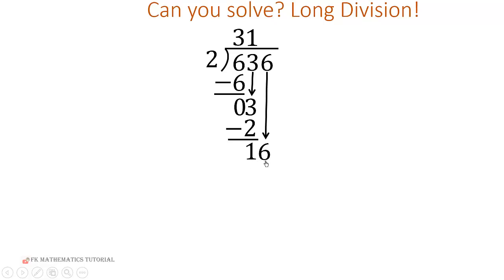So how many groups of 2 ones can be found in 16 ones? We have exactly 8. So 2 times 8 ones will give us 16 ones. Then when we subtract, we have nothing left.